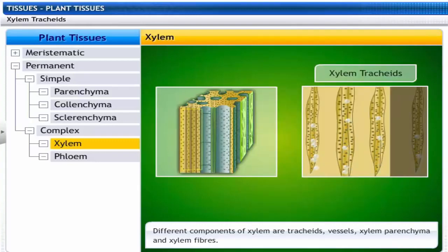Let's explore the different components of the xylem: tracheids, vessels, xylem parenchyma, and xylem fibers. Tracheids are tubular dead cells. They transport water. Their cell wall is made of lignin which provides mechanical support.